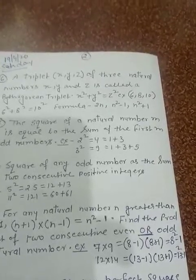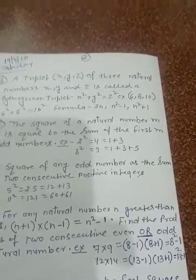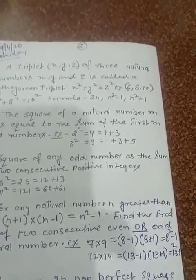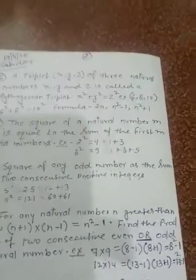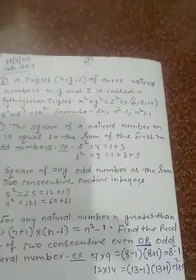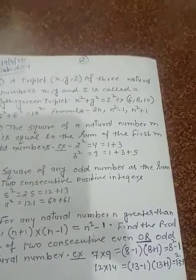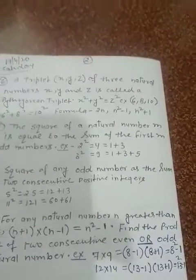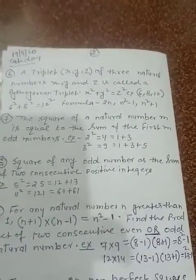Again, we take any other number, 3². 3² is 9. Now, sum of these odd numbers: 1, 3, 5 are the odd numbers. When we add it, we get 9.